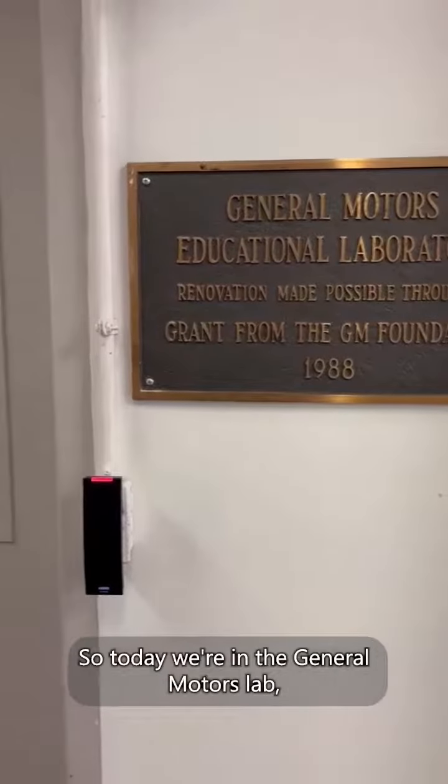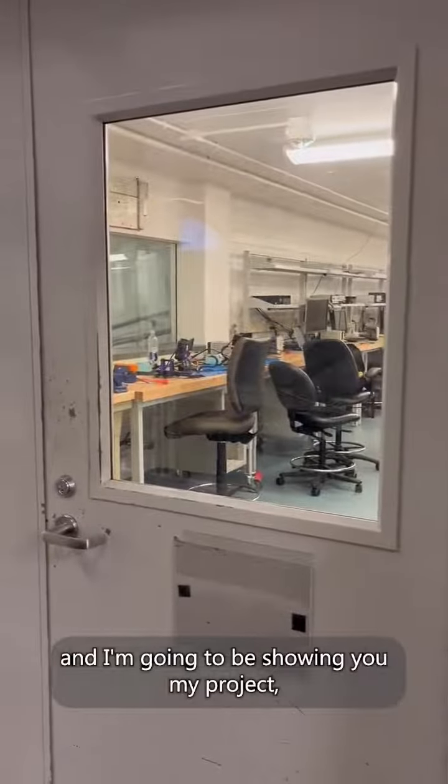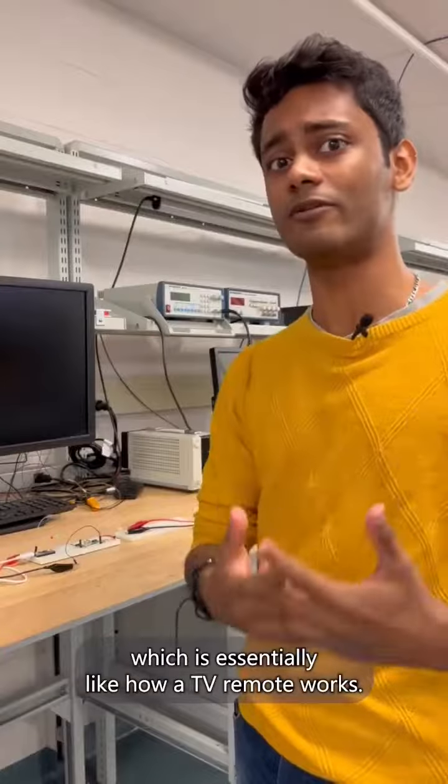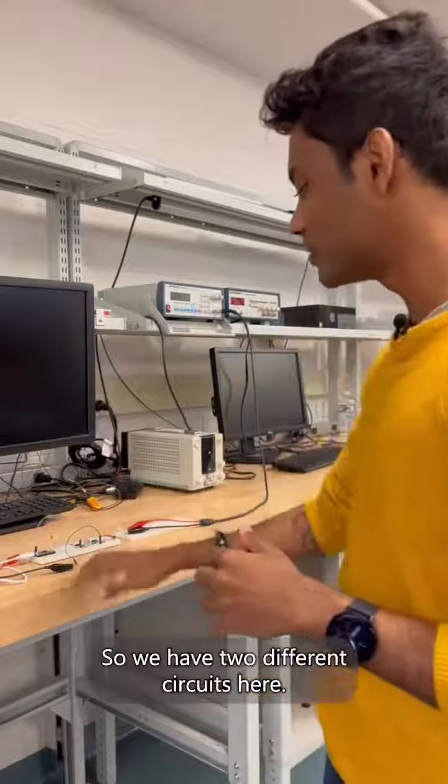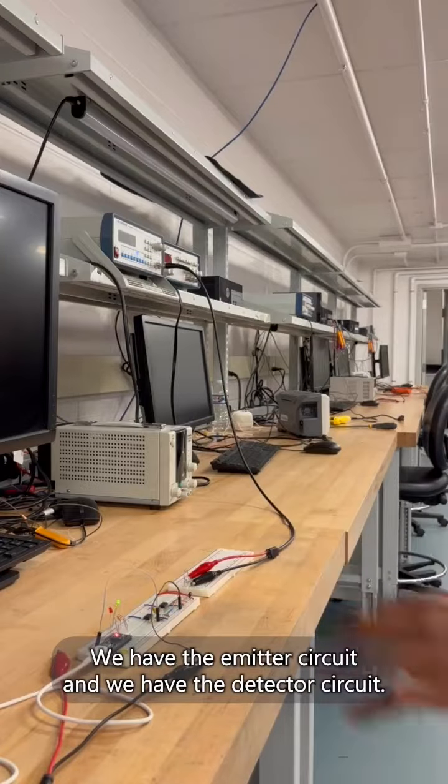So today we're in the General Motors lab and I'm going to be showing you my project, which is essentially how a TV remote works. We have two different circuits here: the emitter circuit and the detector circuit.